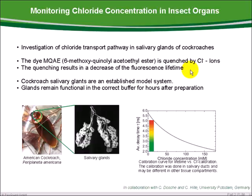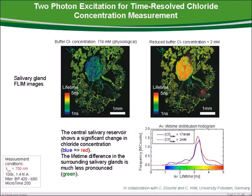We see here the calibration curve where the lifetime is plotted against the chloride concentration. It was measured in situ inside salivary ducts. We see a strong decrease of the fluorescence lifetime towards higher chloride concentrations. These two FLIM images were recorded at different chloride concentrations inside the buffer surrounding the glands. The FLIM measurements were performed with two-photon excitation at 750 nm.